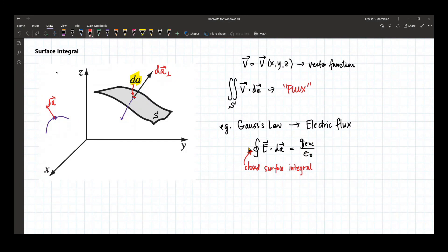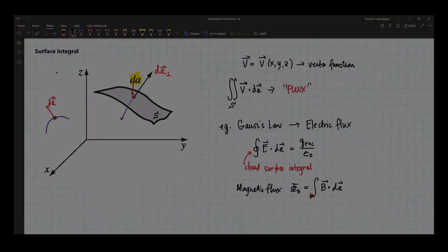We also, we can also, we will also use surface integral when we deal with magnetic flux, which is equal to the integral of B dot dA. It can be closed or it can be an open surface integral.